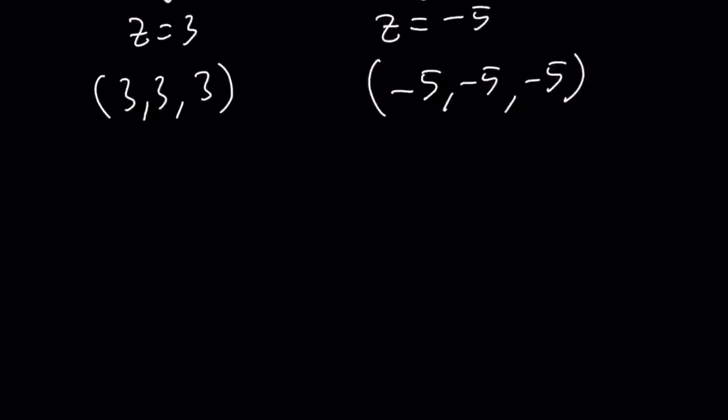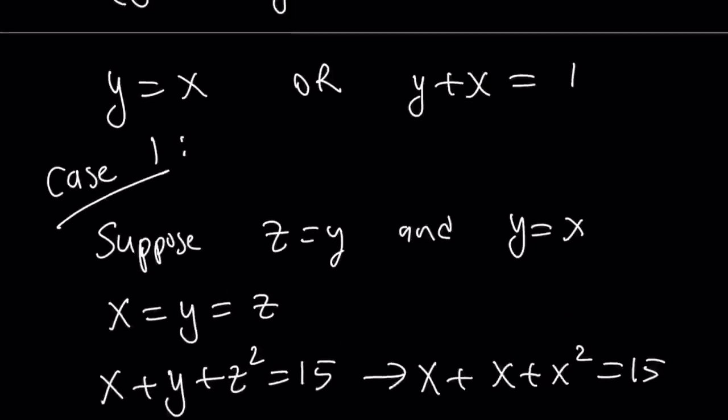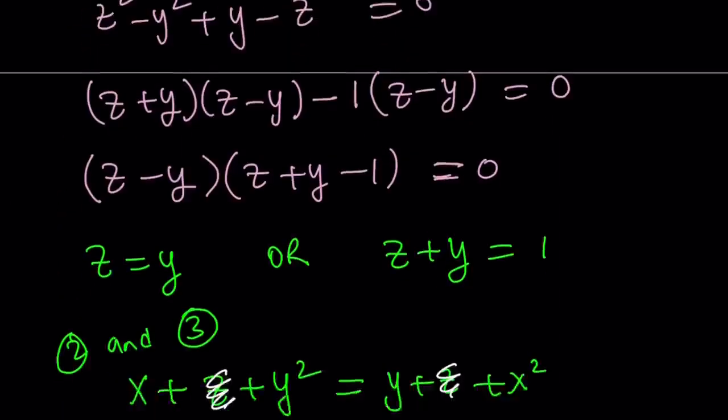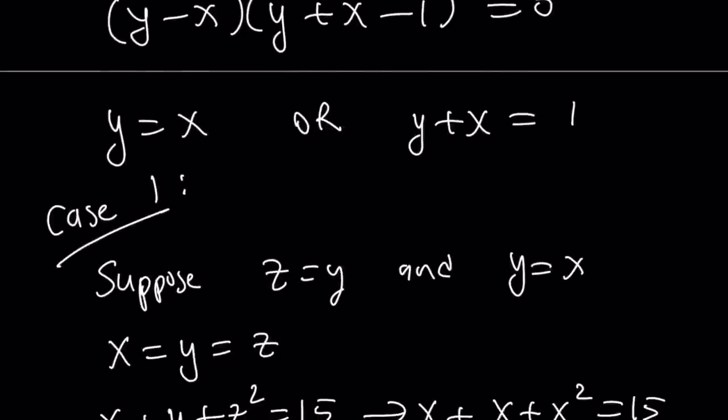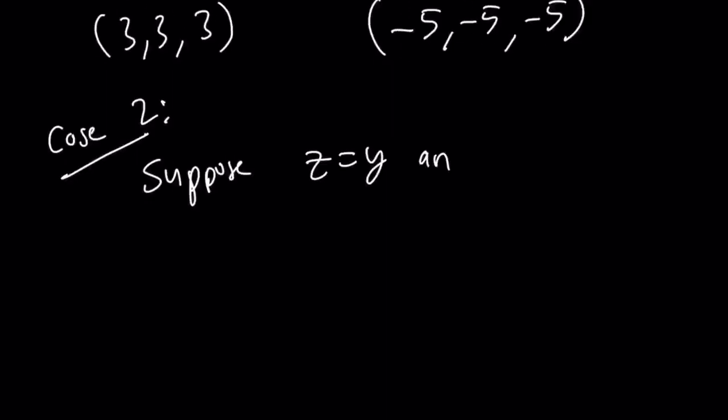So, case 2 is going to be looking at it from a different angle. Now, we're going to consider, I'm okay with z being equal to y. I'm going to take this. I want to take this, but I don't want to go with y equals x, but I want to go with this one now. So, kind of like a crisscrossing. So, I'm going to suppose z equals y and y plus x equals one.